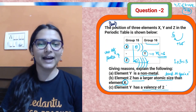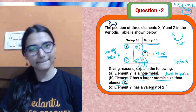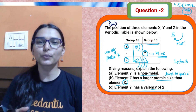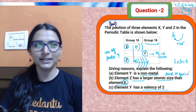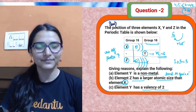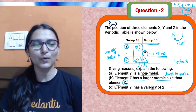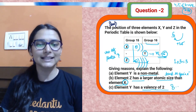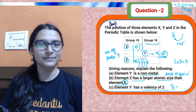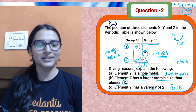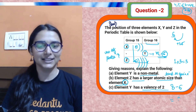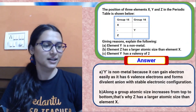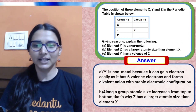Part three: element Y has a valency of two. Y has six valence electrons and needs two more electrons to get stabilized, so valency is two. When valence electrons are more than four, valency is calculated by subtracting valence electrons from eight: 8 − 6 = 2. Either way you get two.